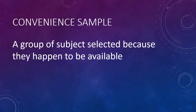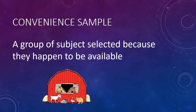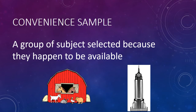One type of sample is a convenience sample, where a group of subjects is selected because they happen to be readily available — for example, the students in my class or a local elementary school. Convenience samples are easy to find since you just pick whoever's at hand, making the study easier to conduct. However, there's no guarantee that those who are convenient are anything like the population as a whole. If you take a convenience sample in rural Nebraska, the subjects may not be much like people in inner-city New York.